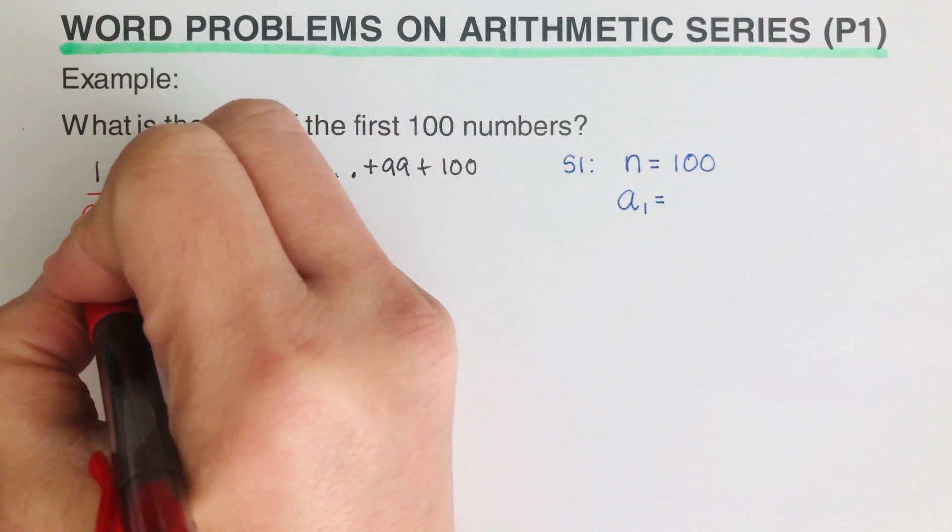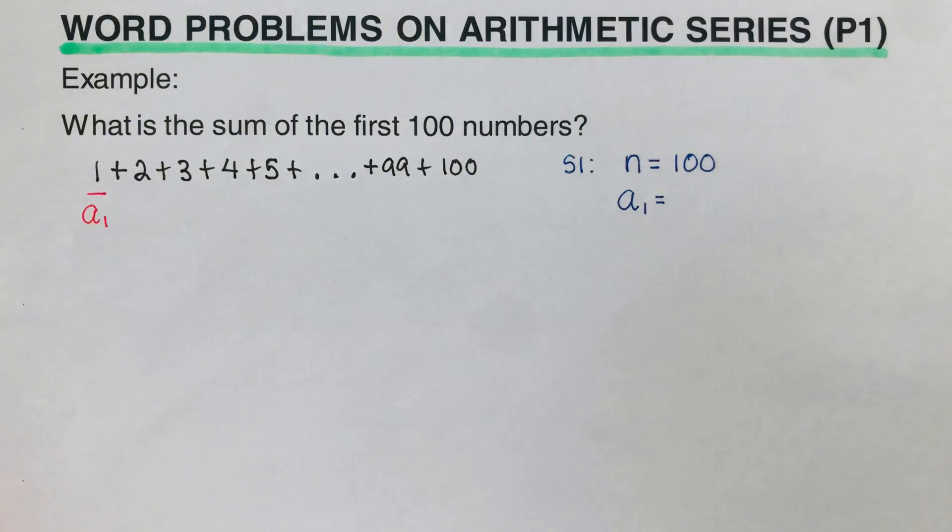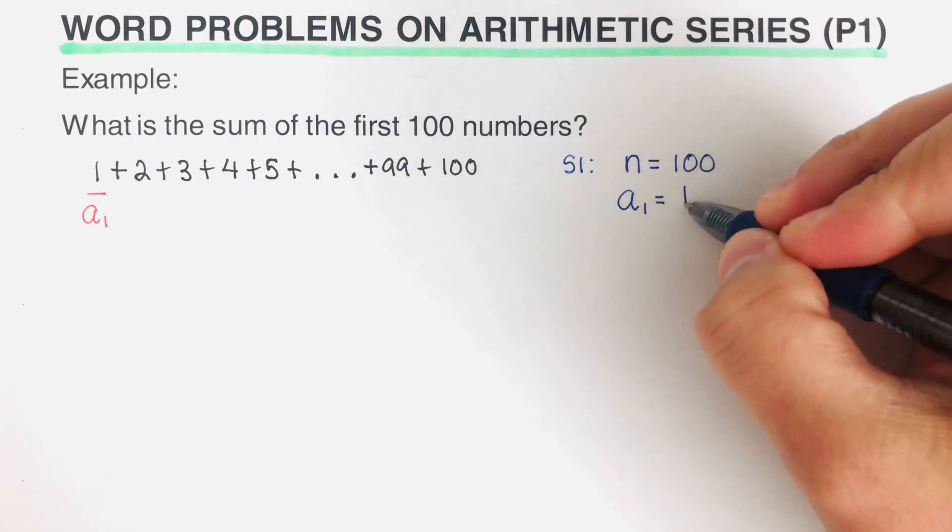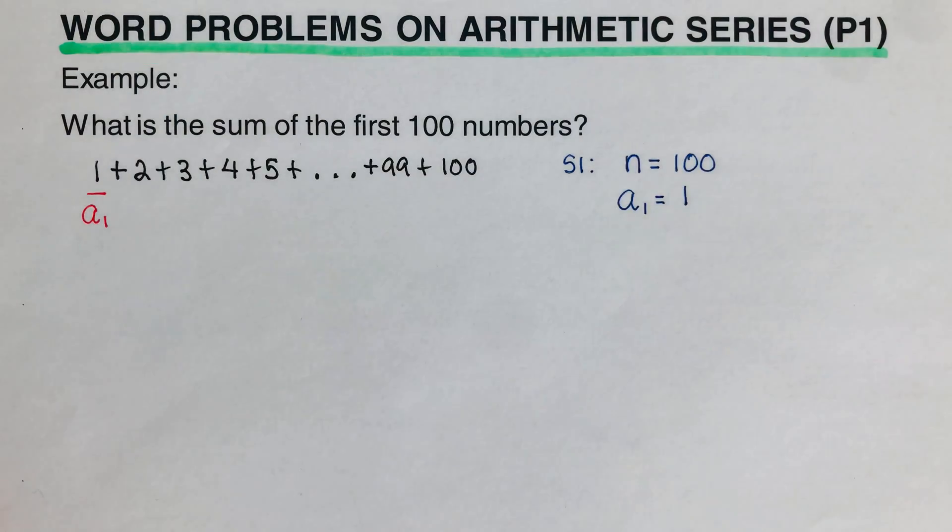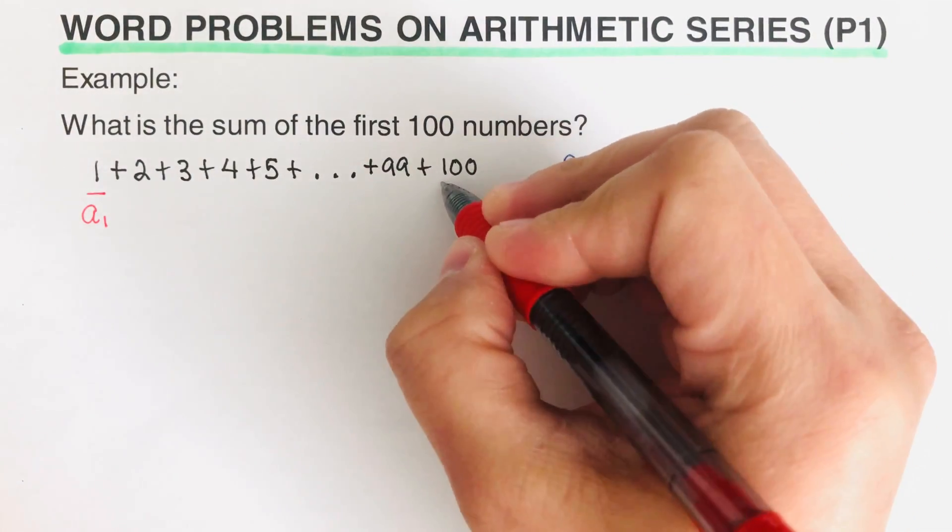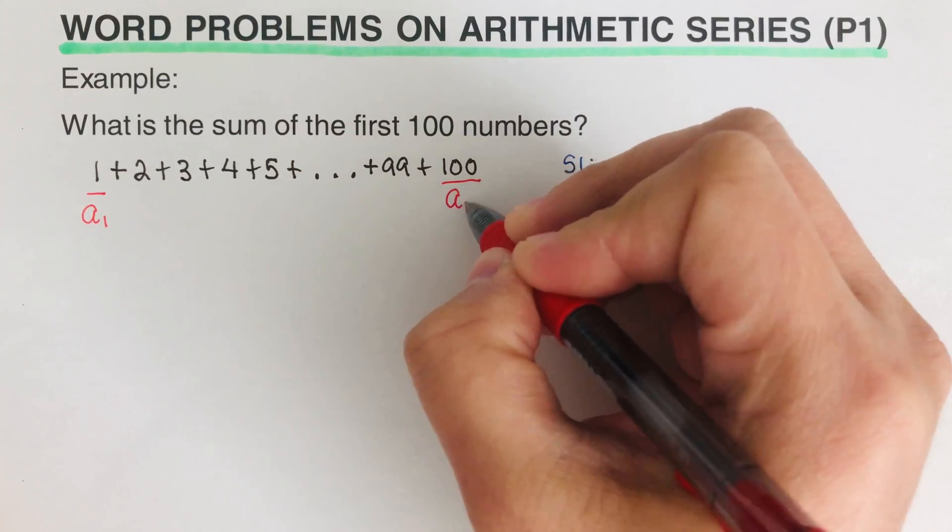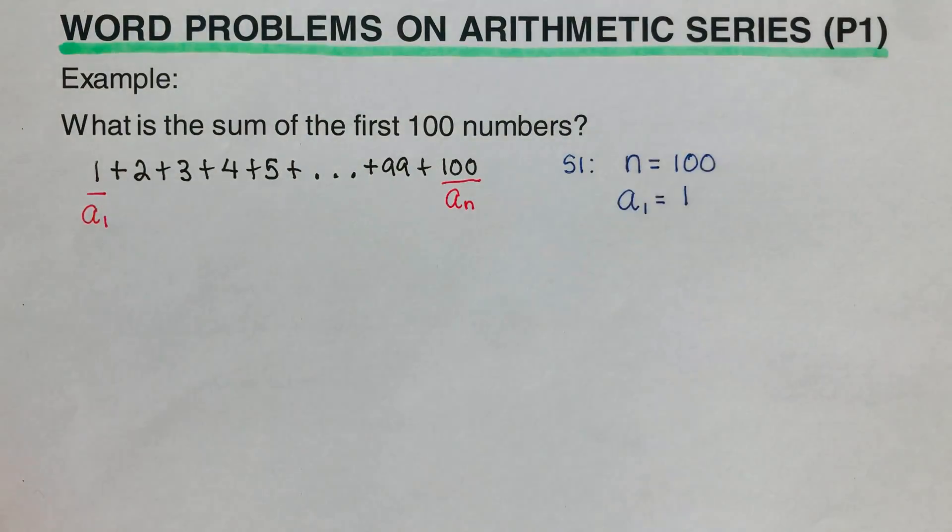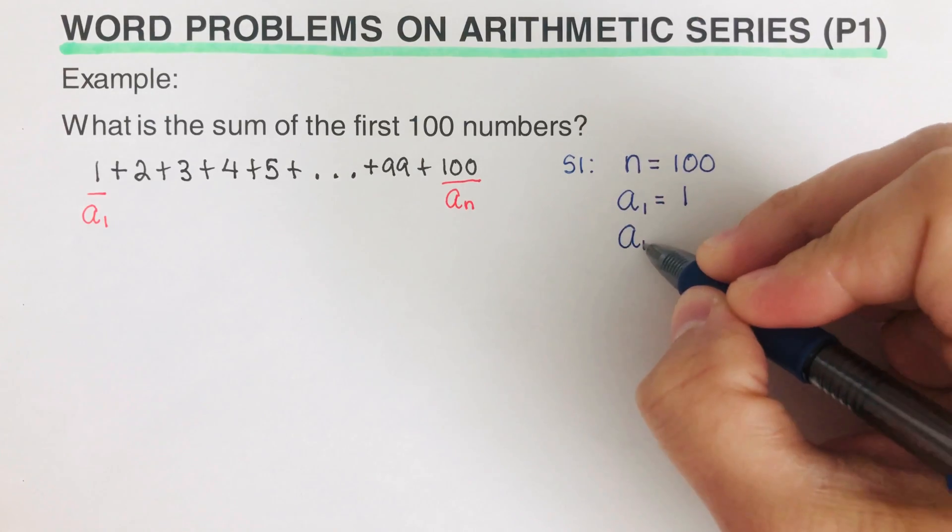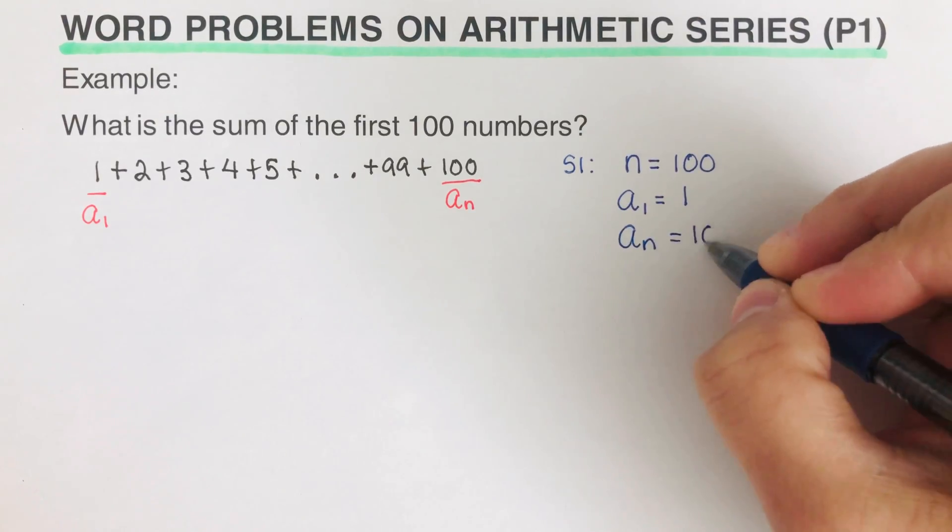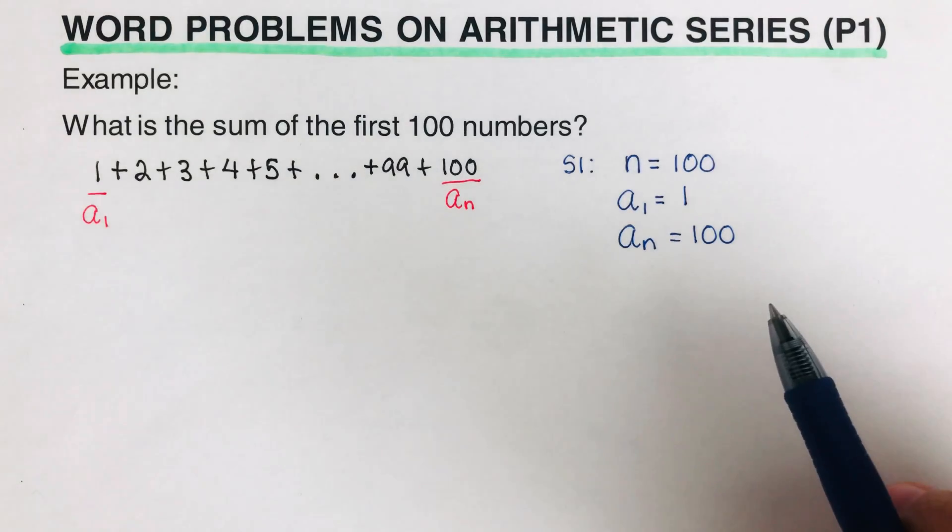And then we are supposed to determine our a sub n. a sub n is the last term, so our last term is—just label this as a sub n. So then we can say that the a sub n is 100, so a sub n is 100. So that we can move on to the second step.